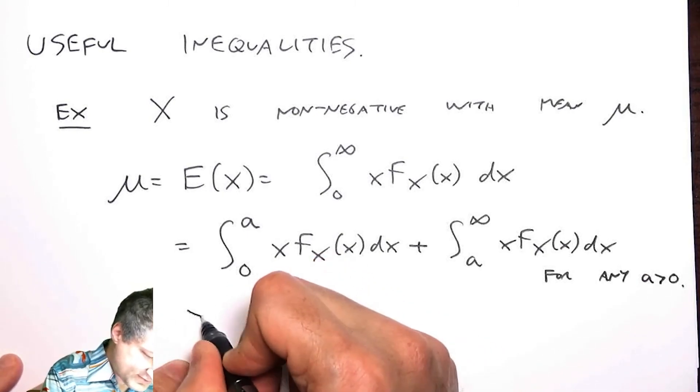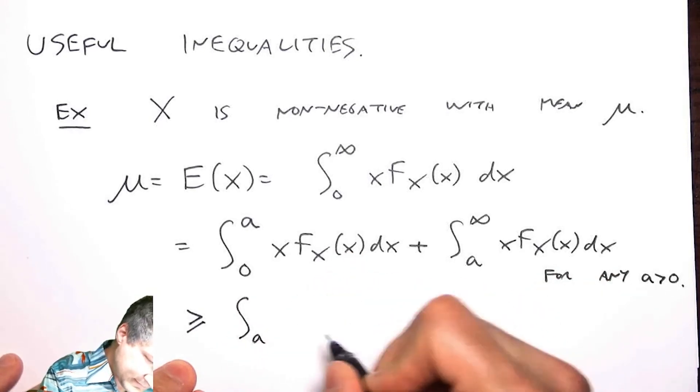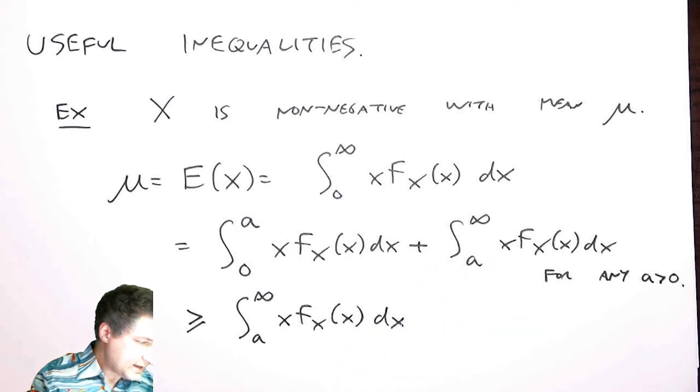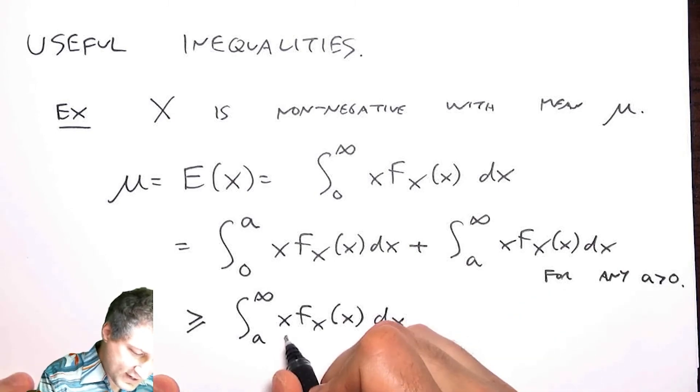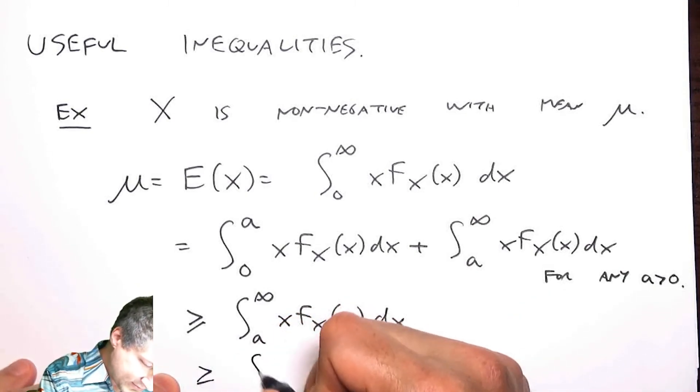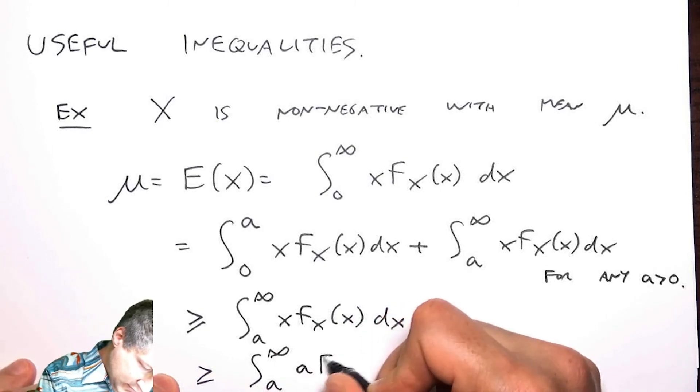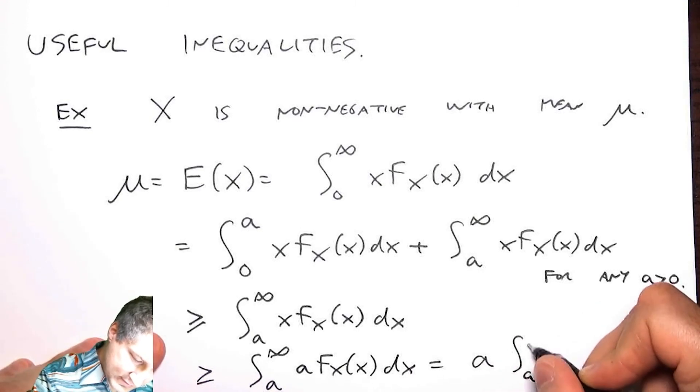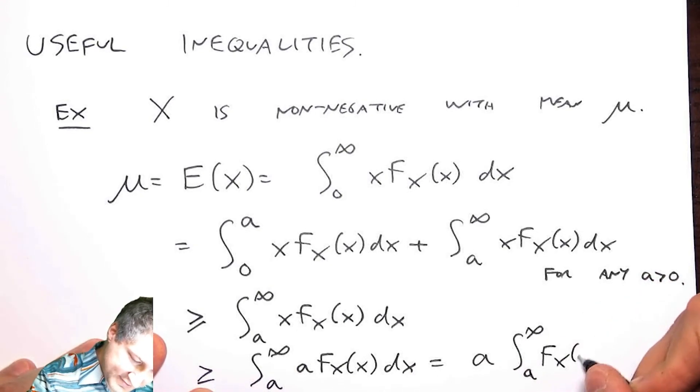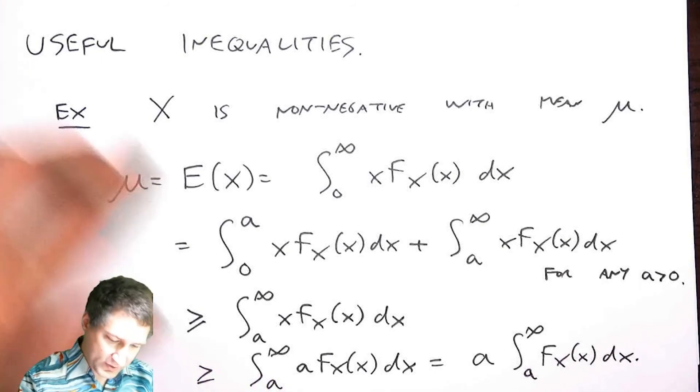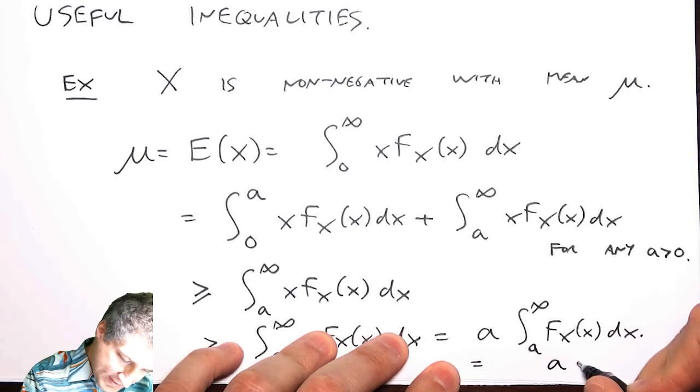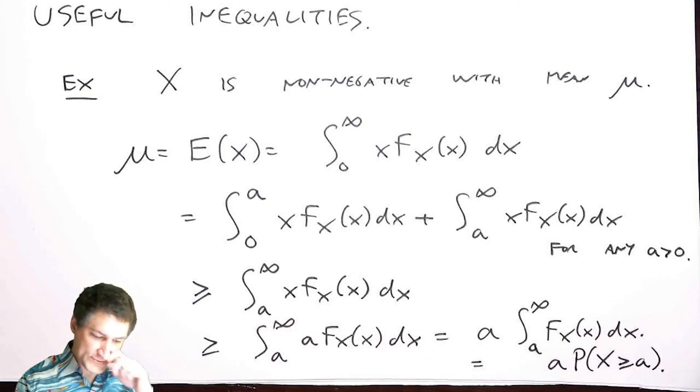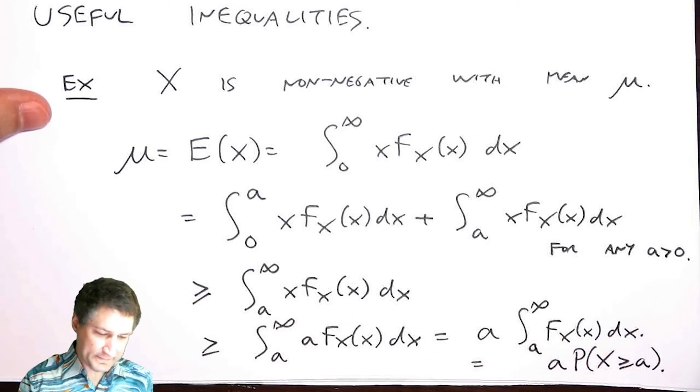How does this help me? Well, I can say this is at least as much as just the last part. And for every one of these values, x is at least as much as a, which is equal to a times this integral, which is basically like the tail of the CDF starting from a. So what did I learn? This is equal to a times the probability that X is greater than or equal to a.